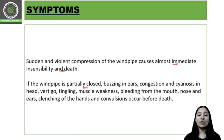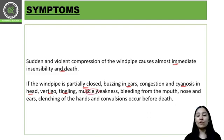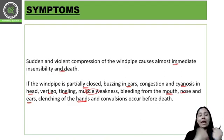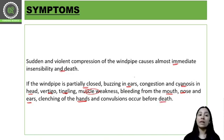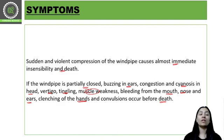With partial windpipe closure, symptoms include congestion and cyanosis in the head, vertigo, tingling, and muscle weakness. Bleeding from the mouth, nose, and ears is also an important symptom. Clenching of the hands and feet is seen, and convulsions occur before death. These symptoms apply to any type of strangulation — manual, ligature, bansdola, or throttling.